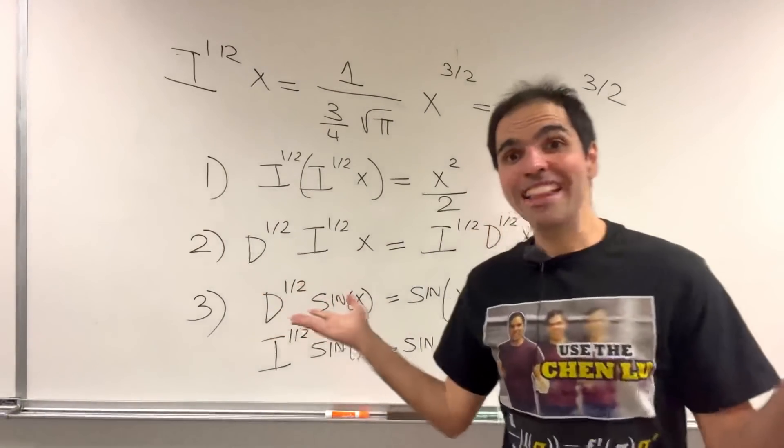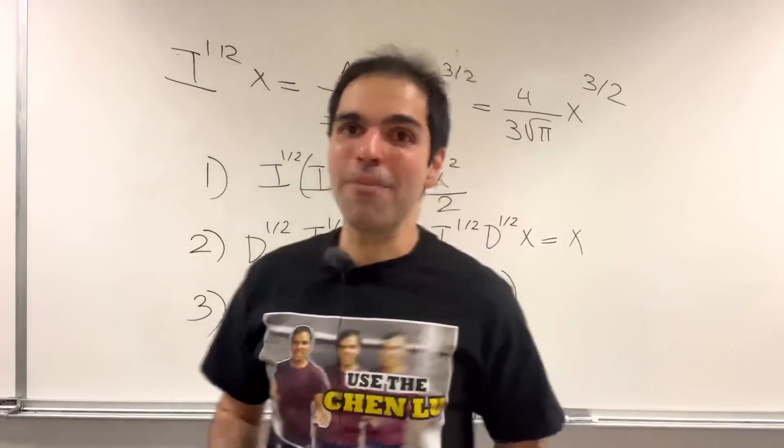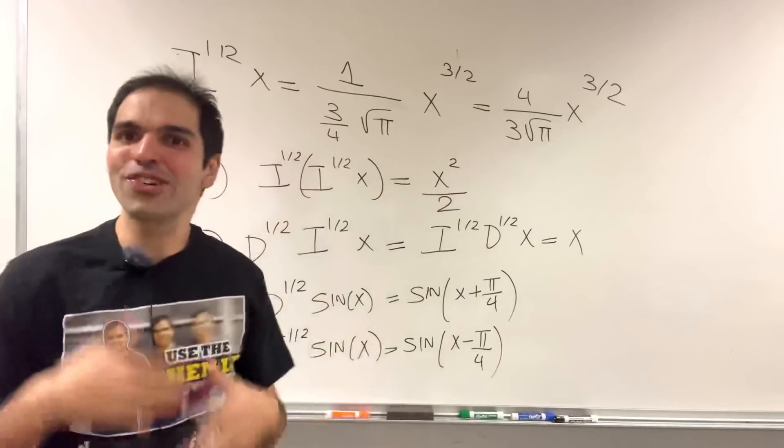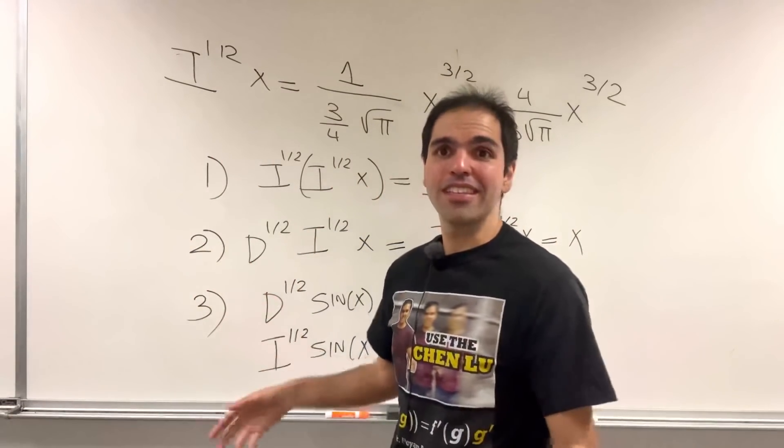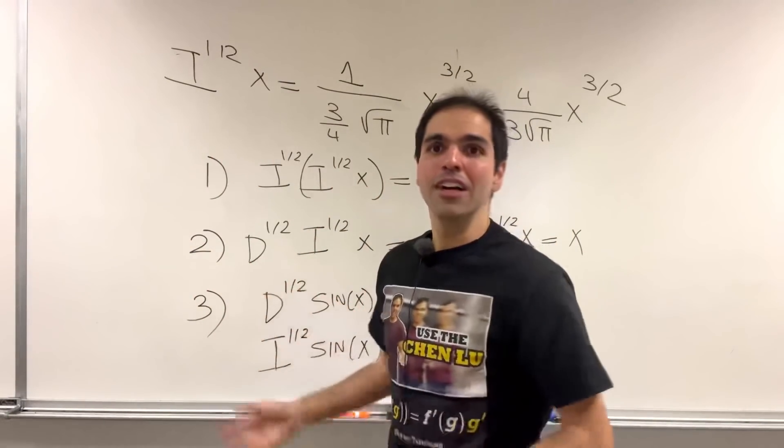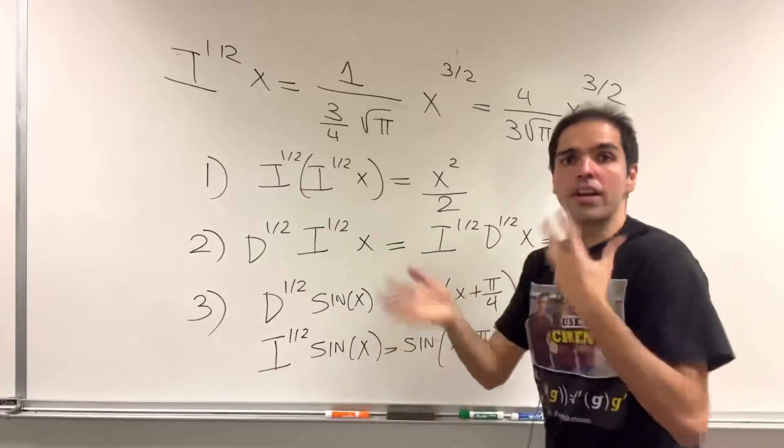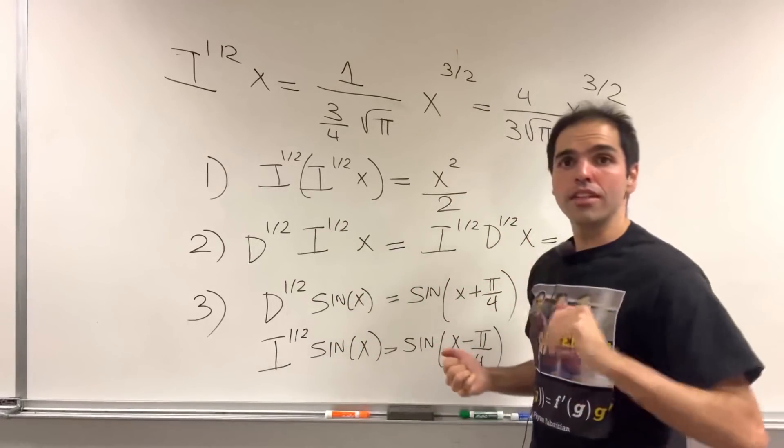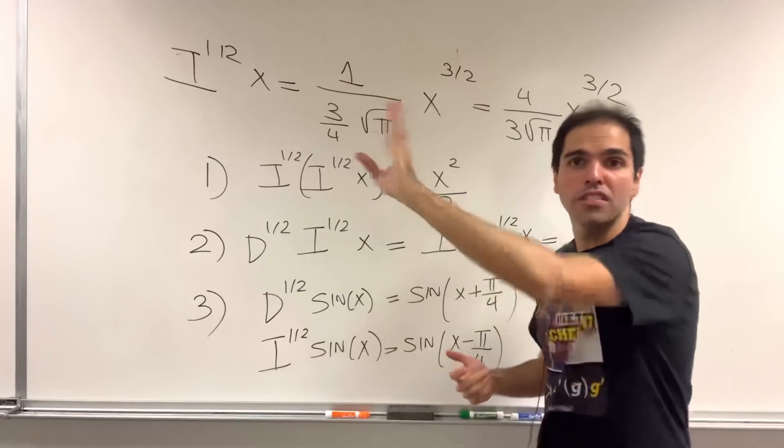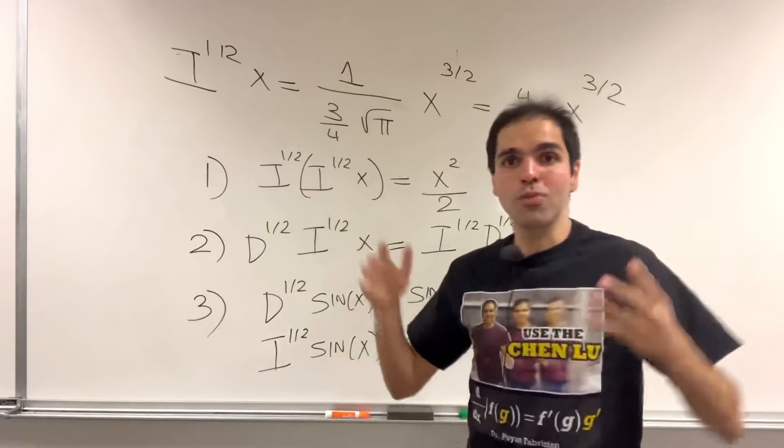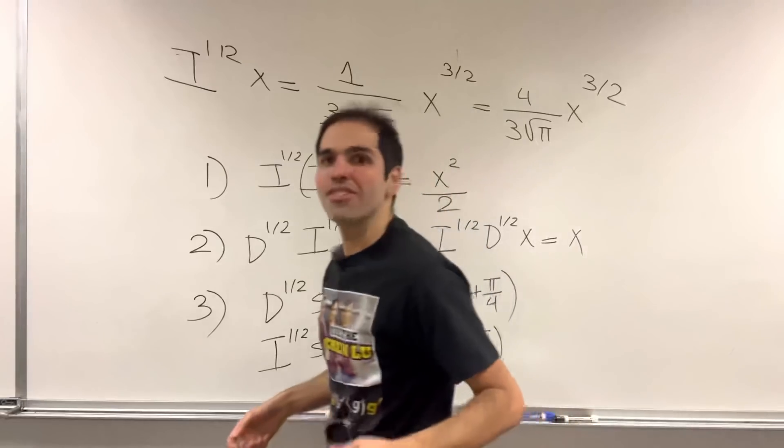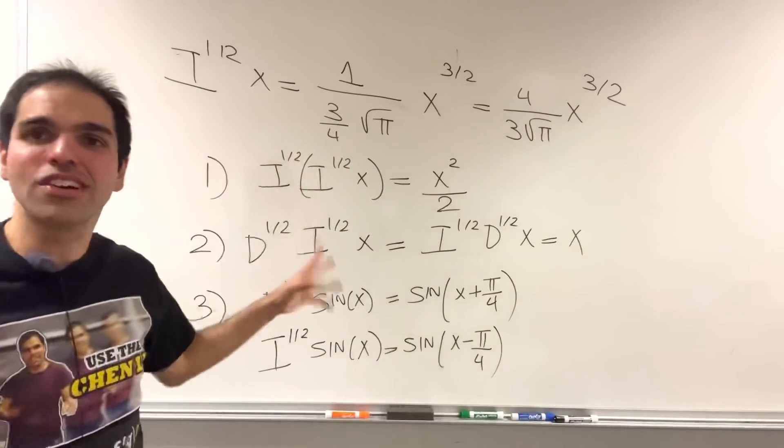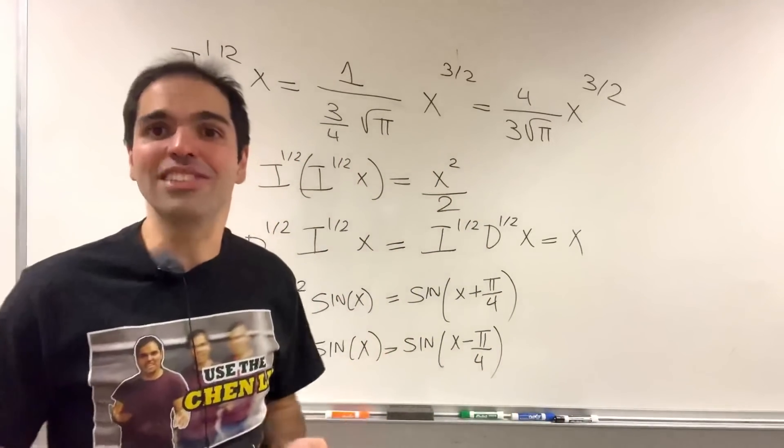And, before we end this, you may ask, what about applications? I'm sure, again, there's a quantum mechanics interpretation of this. But, also, I want to say this is very useful to model what are called Brownian processes. So, think processes that are not smooth. Maybe some fluid that goes through viscous stuff, which makes it hard to move. Turns out you can model this by the half integral.